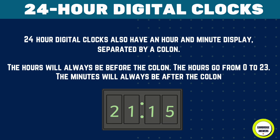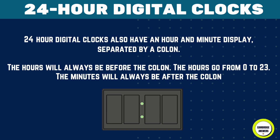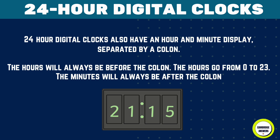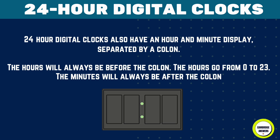24-hour digital clocks have an hour and minute display separated by a colon. The hours always appear before the colon and go from 0 to 23. The minutes always appear after the colon.